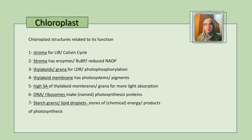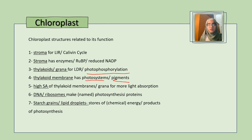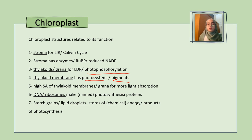Every single structure in the chloroplast plays an important role in how it functions. The stroma is the site of the light-independent reaction or Calvin cycle, and it also contains enzymes, RuBP, and reduced NADP. Thylakoids and grana are for the light-dependent reaction and are the location of photophosphorylation. Thylakoid membranes have photosystems and pigments, and thylakoid membranes and grana provide a high surface area for more light absorption. DNA and ribosomes are used for making photosynthetic proteins via transcription and translation. Starch grains store chemical energy or products of photosynthesis.